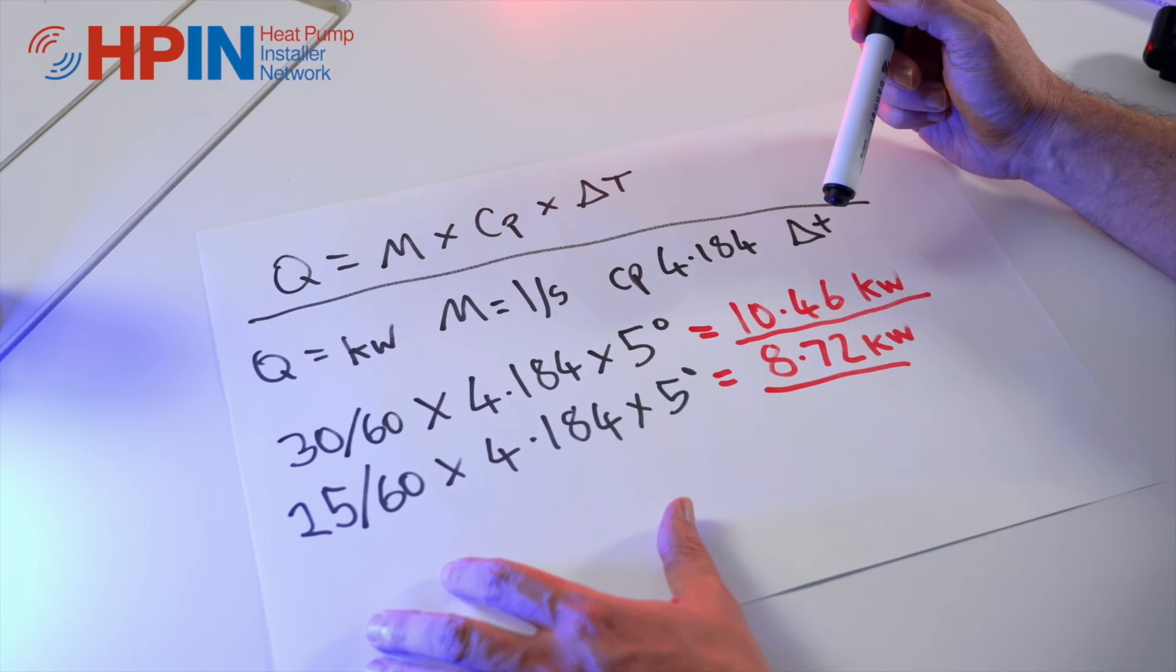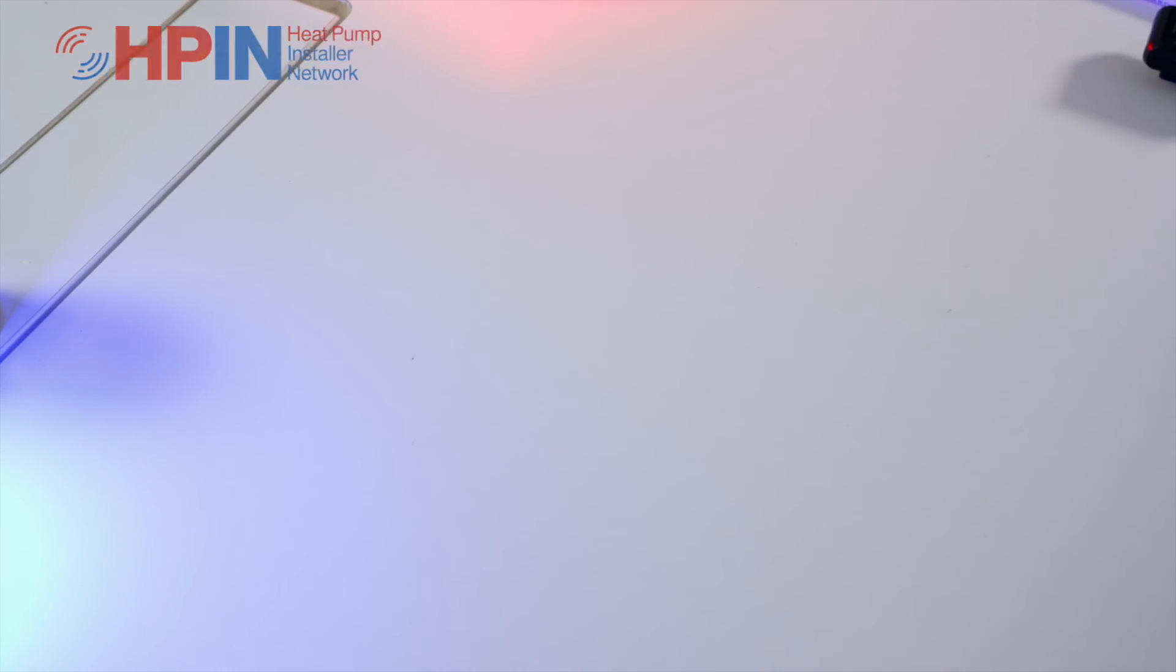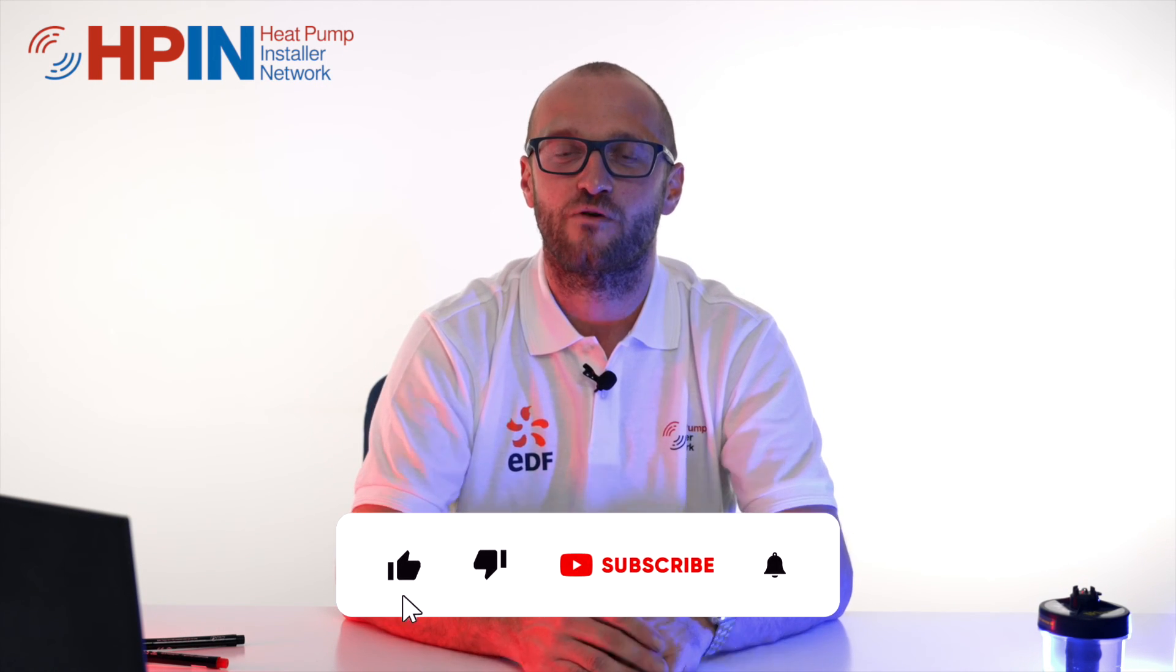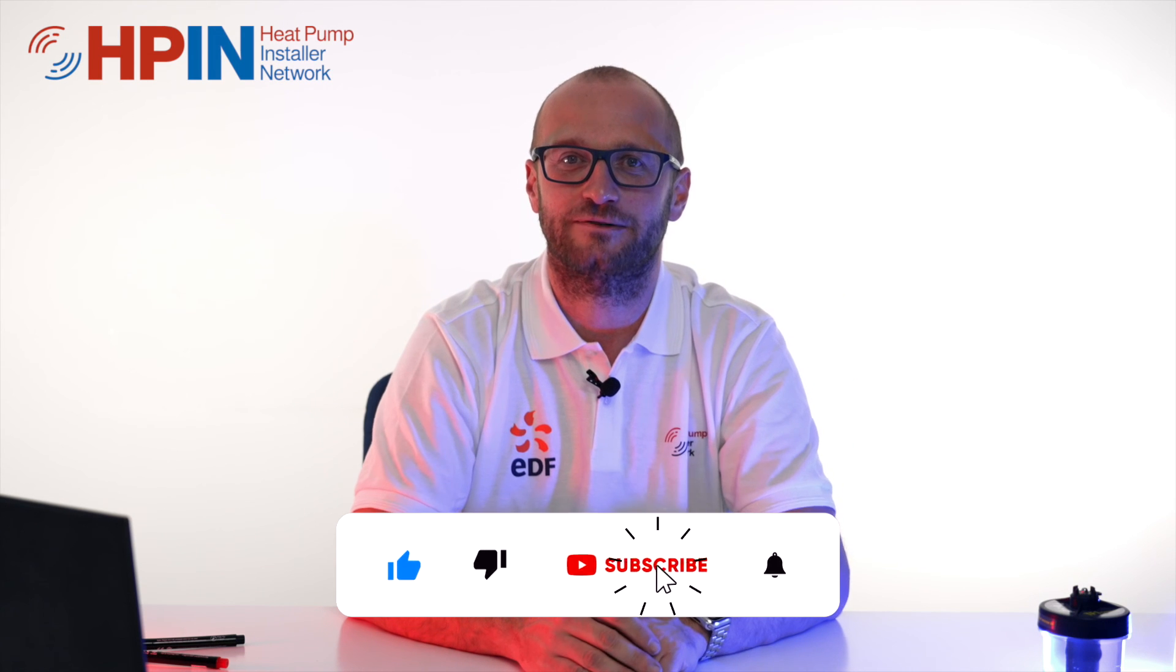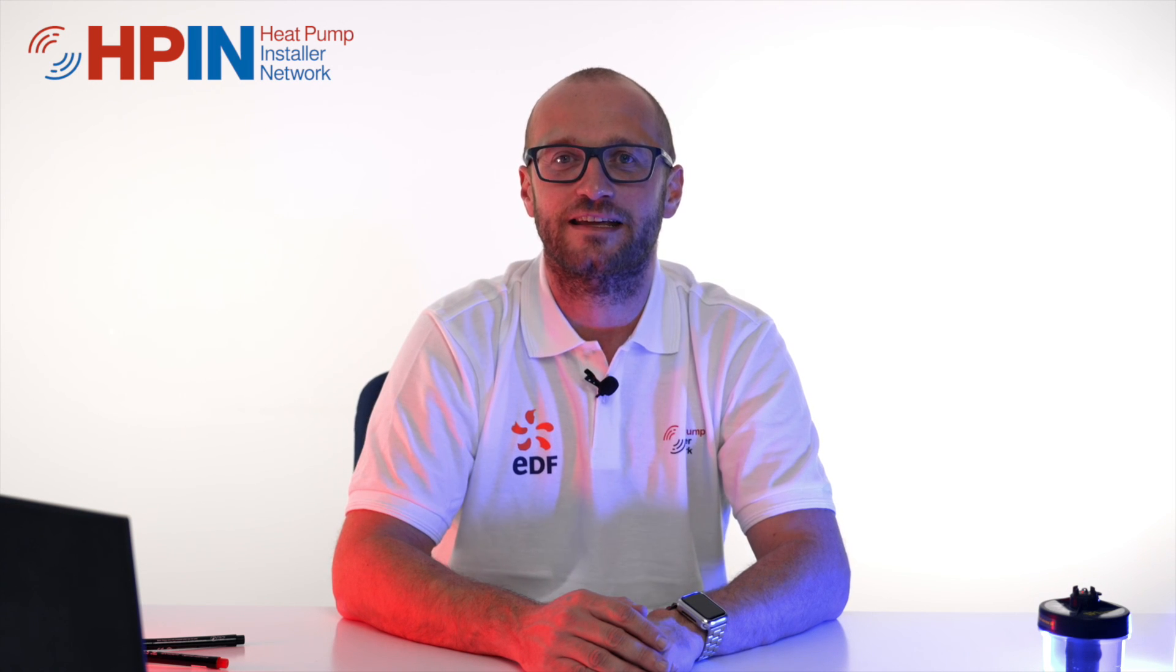So the beauty of the HPIN network is that we do all of this work for you. Thanks for watching today's video on the importance of flow rates for air source heat pumps. For more information, remember to like and subscribe to our channel. In our next video, we're going to be looking at the 7H fault, which is a common fault with the Daikin air source heat pump units, and how to overcome this.